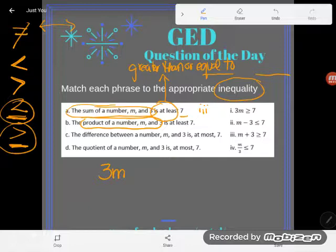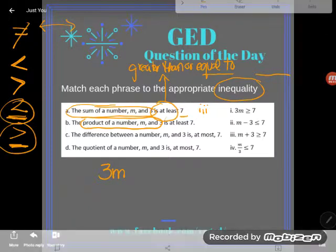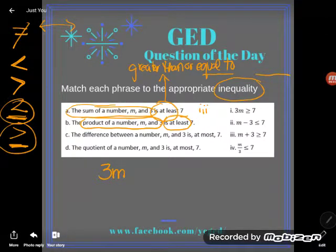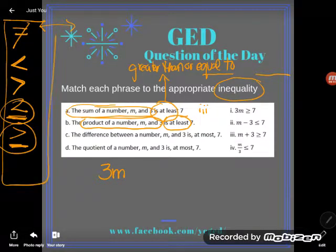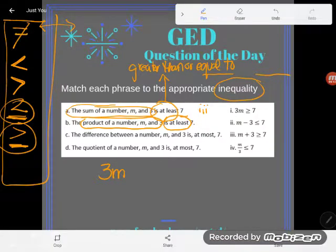Okay? Now, it says that that product of a number M and 3 is at least. Okay, there's the signal that I need my mathematical verb, my inequality symbol in this case.